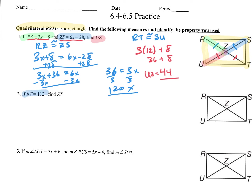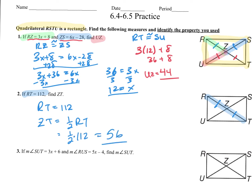Next, RT is equal to 112 — RT is this whole diagonal. Again, if this is a rectangle, these diagonals bisect each other, so these are congruent halves. If RT, the whole, is 112, then ZT is going to be half of RT. Half of 112 is 56. That's what ZT is.